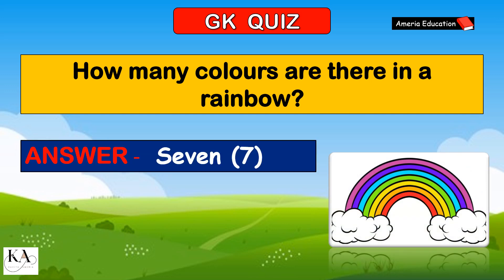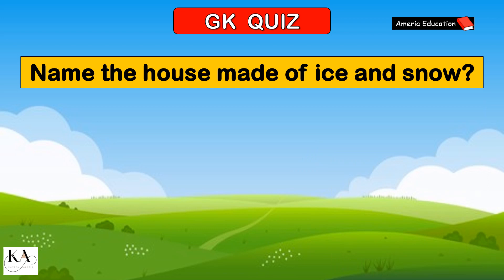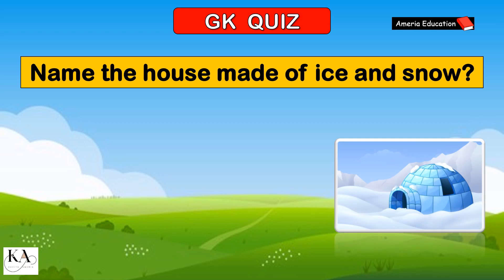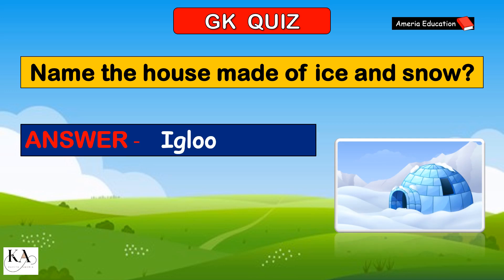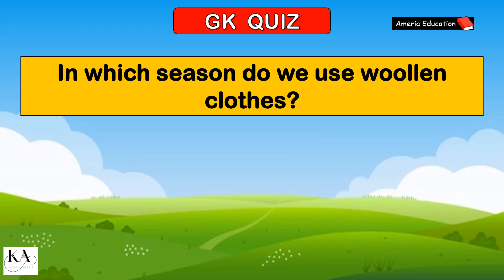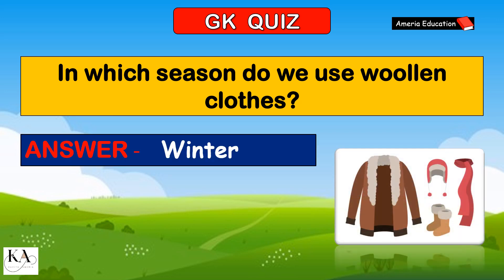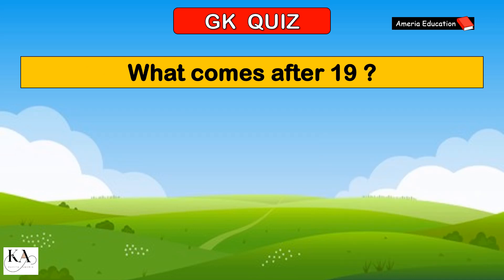How many colors are there in a rainbow? 7 colors. Name the house made up of ice and snow. Igloo. In which season do we use woolen clothes? Winter season.